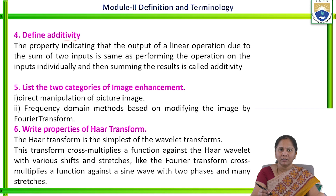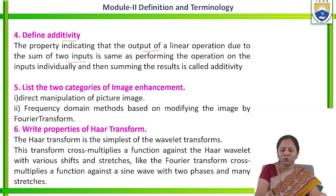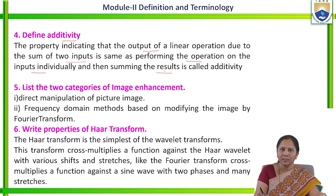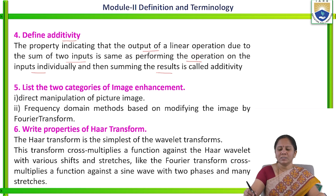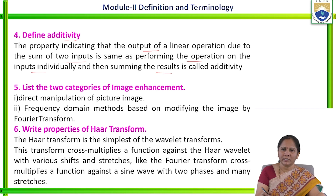Define additivity. This is one of the properties. The property indicating that the output of a linear operation due to the sum of two inputs is equal to — that is, same as performing the operation on the inputs individually and then summing the results — this is called additivity. So, first we can perform the operation and then sum, or we can sum them individually and then perform the operation.